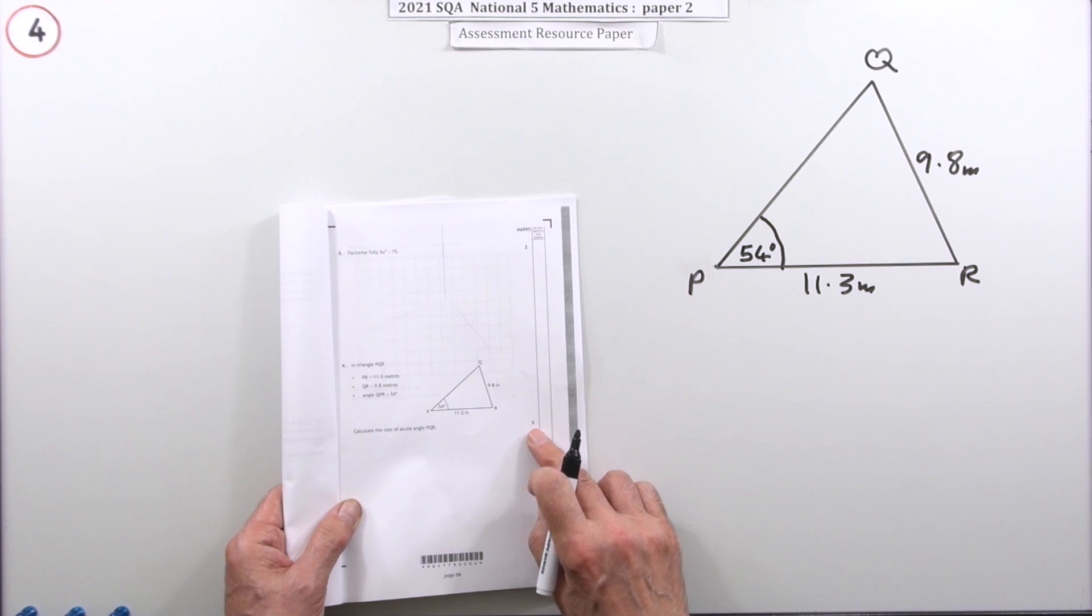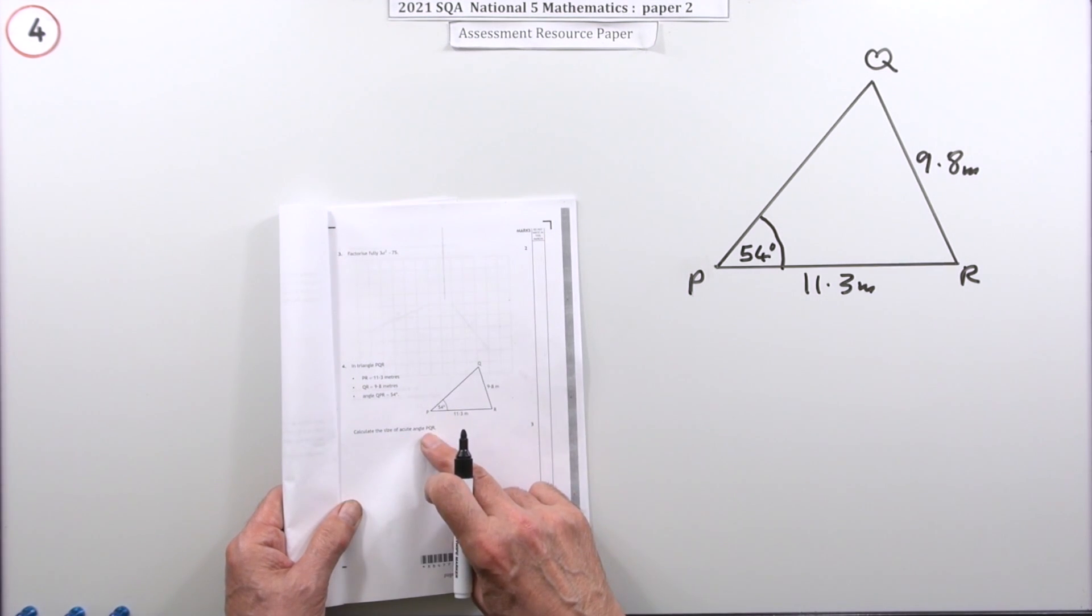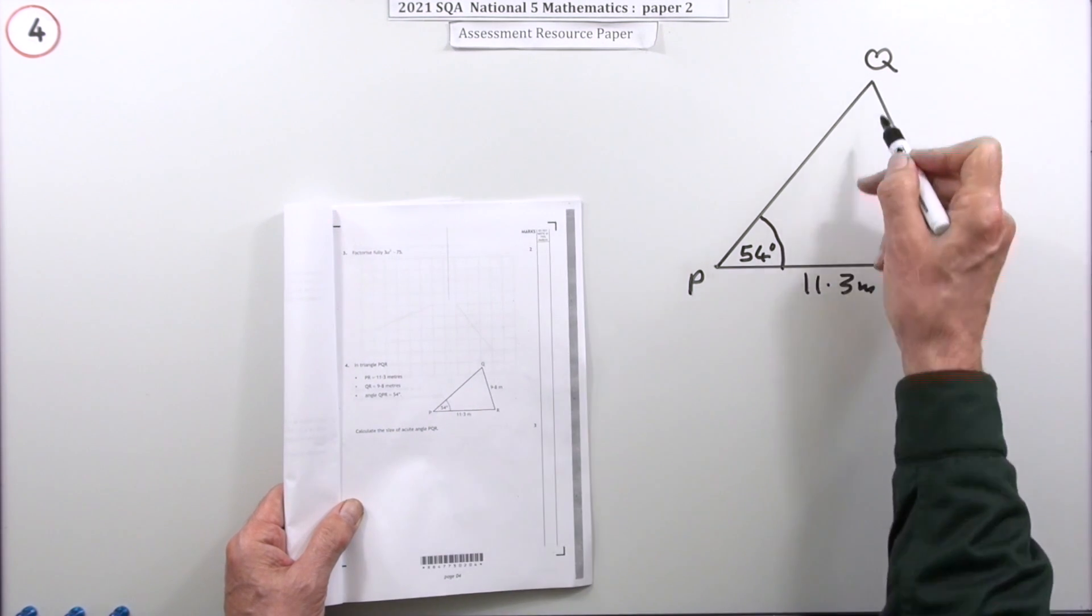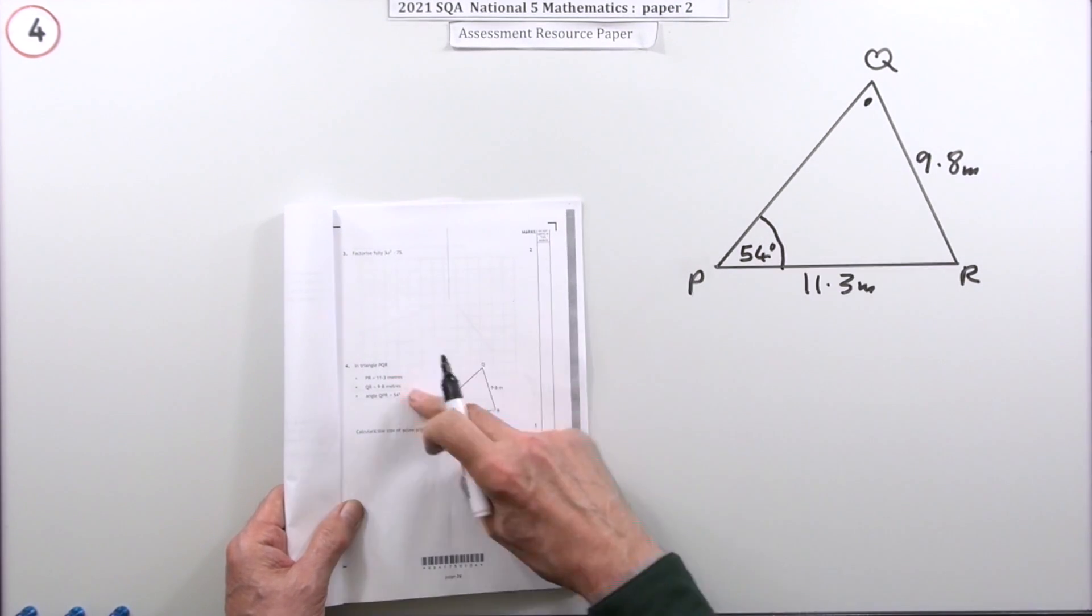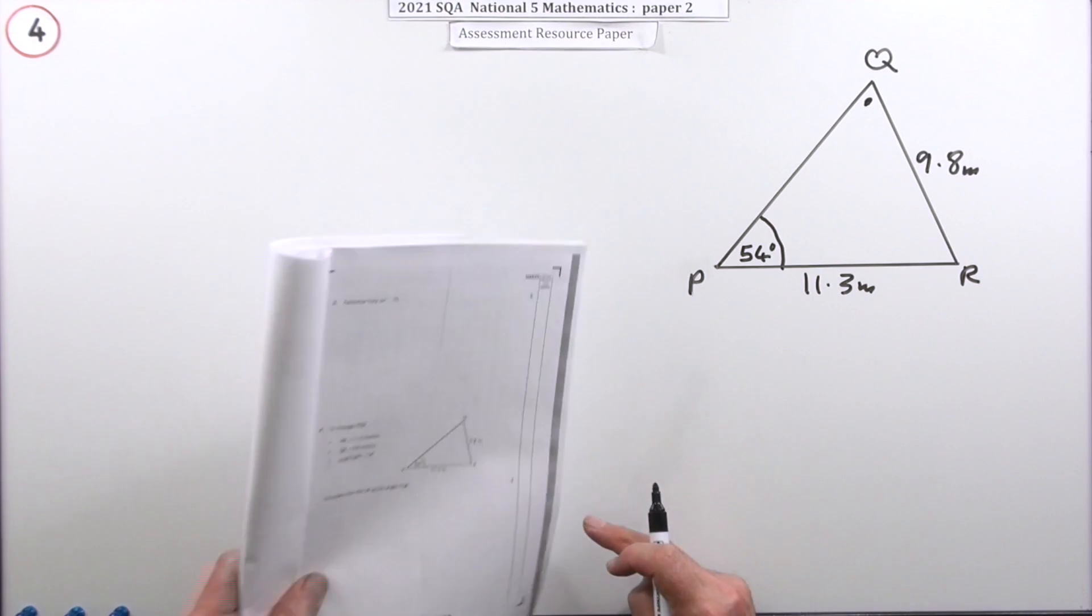So question four then for three marks. Calculate the size of the acute angle PQR, that's this one here, in this diagram. Gives you the information here but it's also in the figure to begin with.